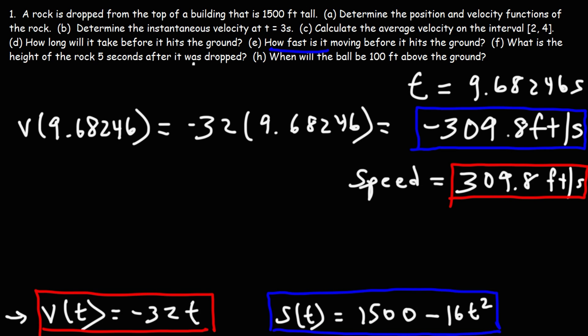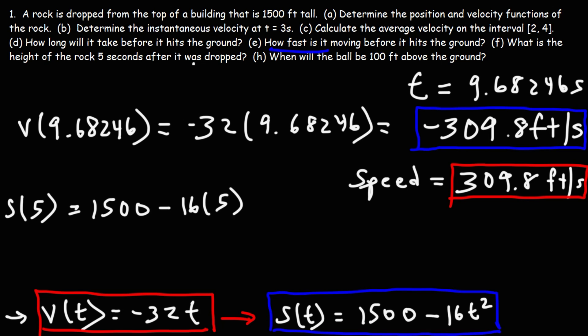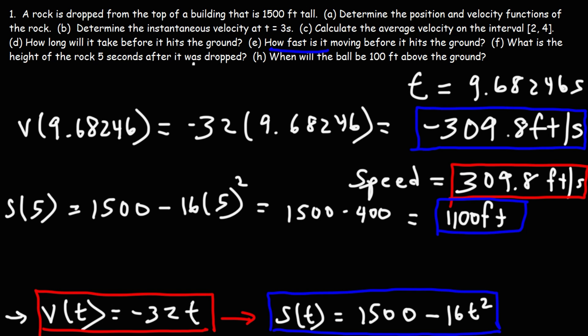Part F: What is the height of the rock five seconds after it was dropped? We use the position function: s(5) = 1500 minus 16 times 5 squared = 1500 minus 16 times 25 = 1500 minus 400 = 1100. So, the rock is 1100 feet above the ground five seconds after it was dropped.